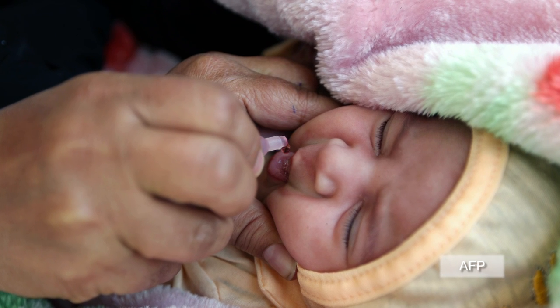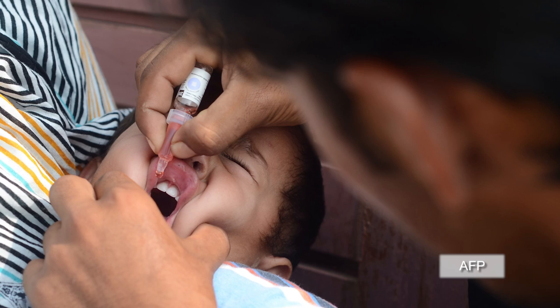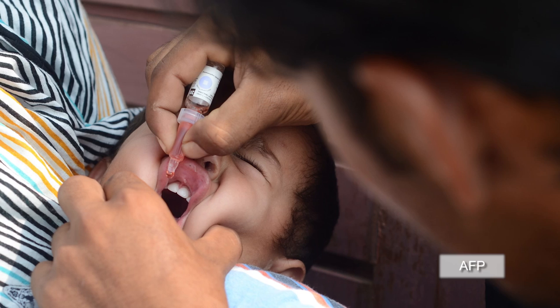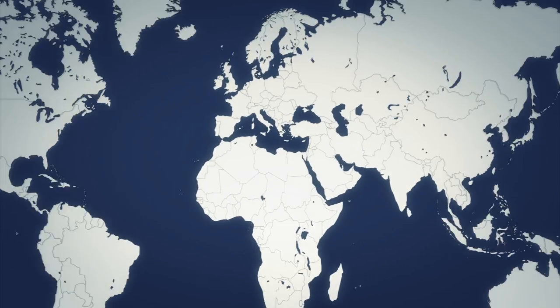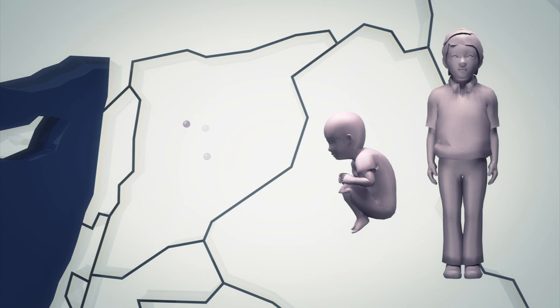At least 22 people are believed to have contracted polio in Syria, the first outbreak of the disease in 14 years. Most of the people affected are babies and toddlers.